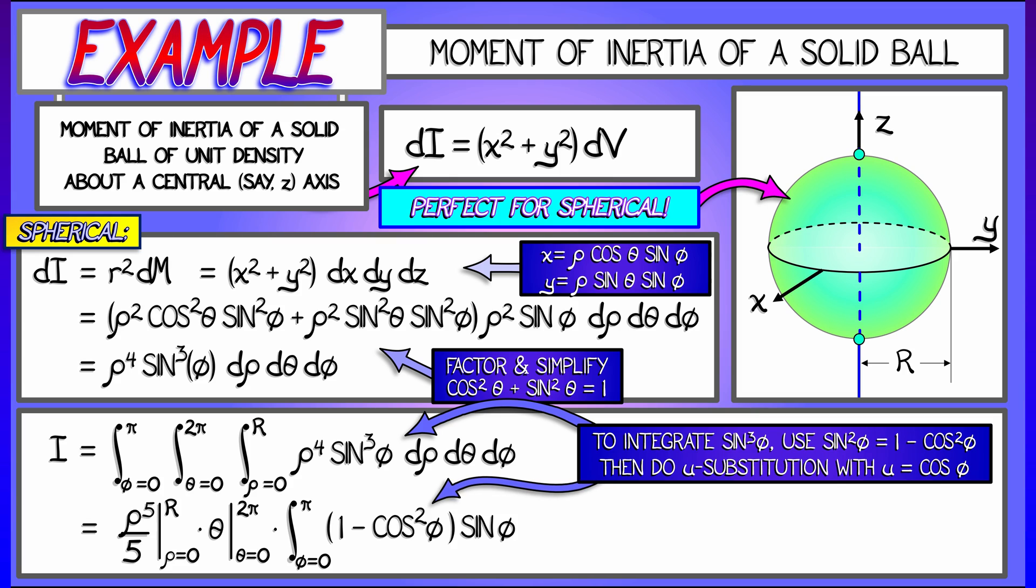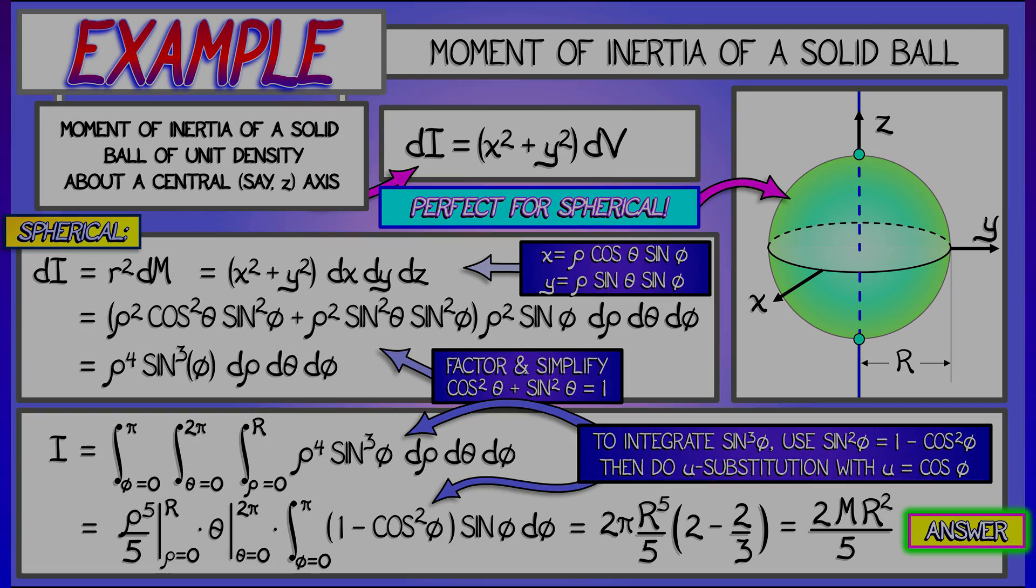That's going to give me a final answer when I substitute everything in of 2 pi times r to the fifth over five times quantity two minus two-thirds. Doing that last integral, that simplifies to two-fifths m r squared, where m is the mass of this unit density ball. That's not so bad, thanks to spherical coordinates. Thank you so much for doing that.